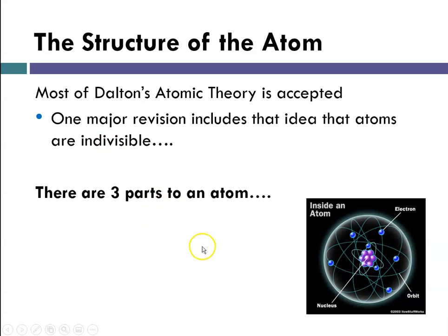We know now that atoms consist of three major parts. There are even smaller particles, but the three major parts are electrons, protons, and neutrons. Dalton's theory is mostly accepted to this day with a few major revisions.